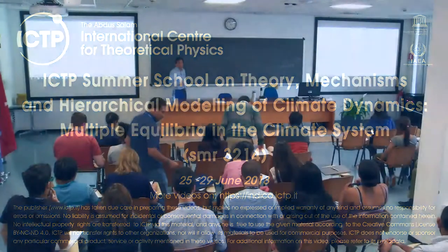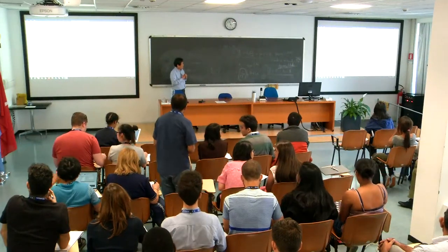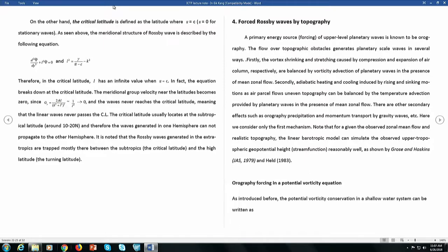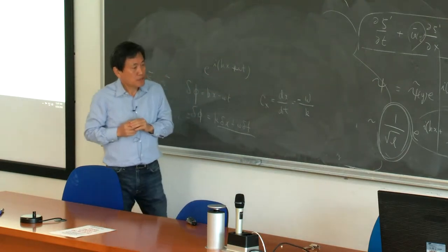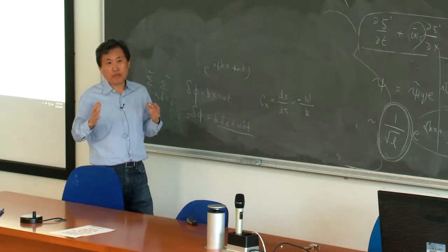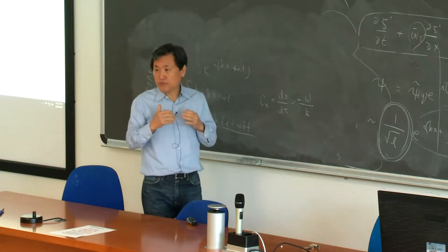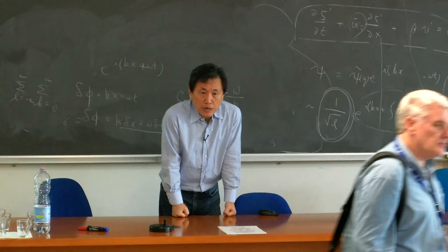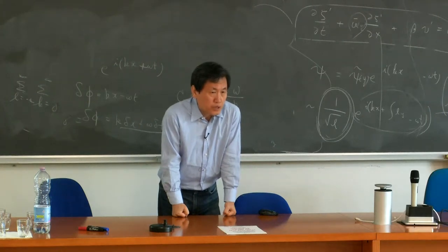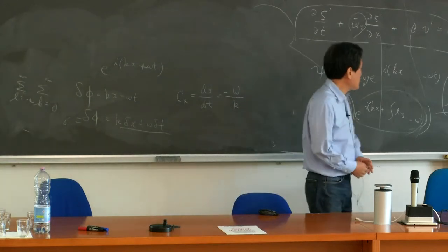Turning latitude is very important. When a wave propagates and touches the turning latitude, the wave amplitude is maximum — very large. As I mentioned, the PNA forcing is located in the subtropics, but the large amplitude of circulation anomaly appears in high latitudes because L equals zero there, at the turning latitude.